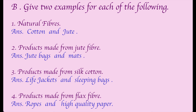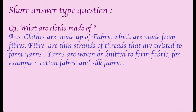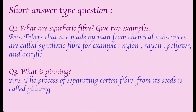Short answer type questions. Question one: What are clothes made of? Clothes are made of fabric, which is made from fibers. Fibers are thin strands of threads that are twisted to form yarn. Yarns are woven or knitted to form fabric, for example cotton fabric and silk fabric.